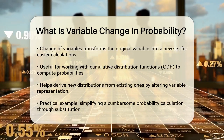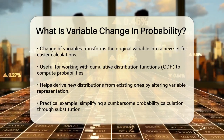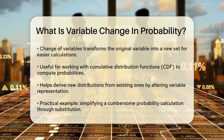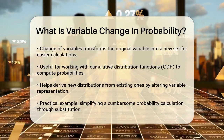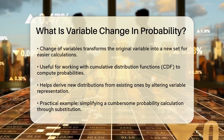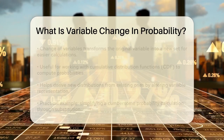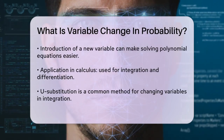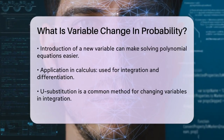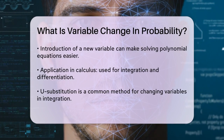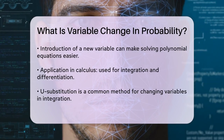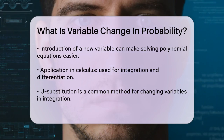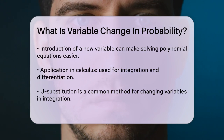Let's consider a practical example. Suppose you want to find the probability of a certain event occurring, but the original variable makes the calculation cumbersome. By introducing a new variable through a substitution, you can transform the problem into a more manageable form. For instance, if you have a polynomial equation that's difficult to solve, you can define a new variable that simplifies the equation, making it easier to solve for the original variable.